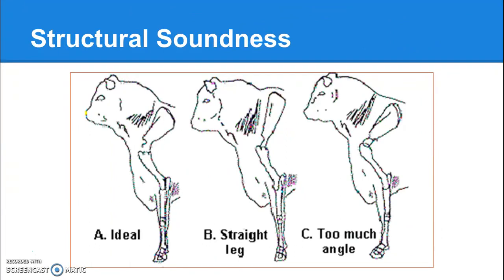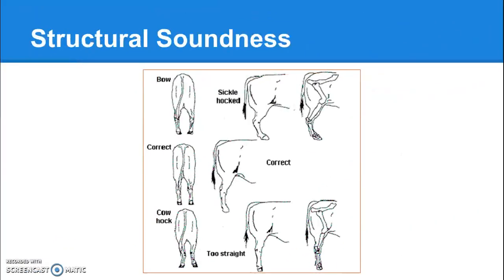When we talk about structural soundness, the ideal is about a 90-degree angle in the shoulder. If the shoulder angle is too wide, the leg will be too straight, putting undue pressure on the knee and the fetlock. If the angle is too small, you're going to end up with more pressure on the elbow and the knee — that's really where you'll see your problems.